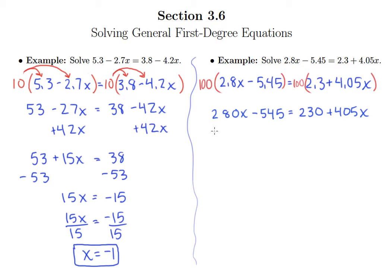So let's go ahead and get x's on one side, constants on the other, so I'm going to subtract 280x from both sides. So this is negative 545 equals 230, and let's see the difference here is 125, so we have plus 125x. You can subtract 230 from both sides.